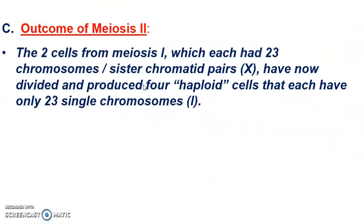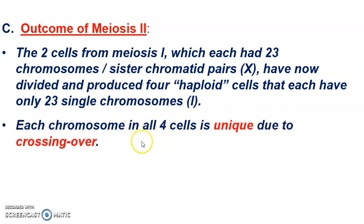Overall, the outcome of meiosis II: the two cells from meiosis I, at least in regards to human cells, each started off with 23 chromosomes or sister chromatid pairs. And now after meiosis II is complete, we're going to have four cells that are haploid, with 23 single chromosomes. Every single one of the four cells will be unique due to crossing over that happened in prophase I. Crossing over, which introduces variation, happens in prophase I — not prophase II or prophase of mitosis.